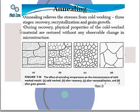During recovery, physical properties of the cold-worked material are restored without any observable change in microstructure. The three phases of annealing are: first recovery, then recrystallization — where crystals form — and finally grain growth. This is the order: recovery, recrystallization, then grain growth.